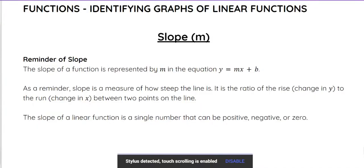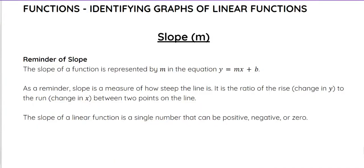In this video we're going to look at slope specifically and how it actually affects a graph. We've talked about how we calculate slope from two points, from a graph, and how we look at an equation in slope-intercept form and pull out m to tell us the slope. Now let's talk about how that affects the graph before we later get into graphing from slope-intercept form.